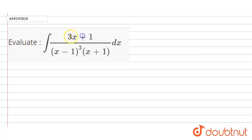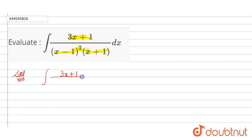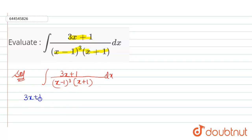Hello everyone. The question is: integration of (3x + 1) divided by (x − 1)³ into (x + 1) dx. Now let's come to the solution. The given expression is integration of (3x + 1) divided by (x − 1)³ into (x + 1) dx. We apply the partial fraction method.